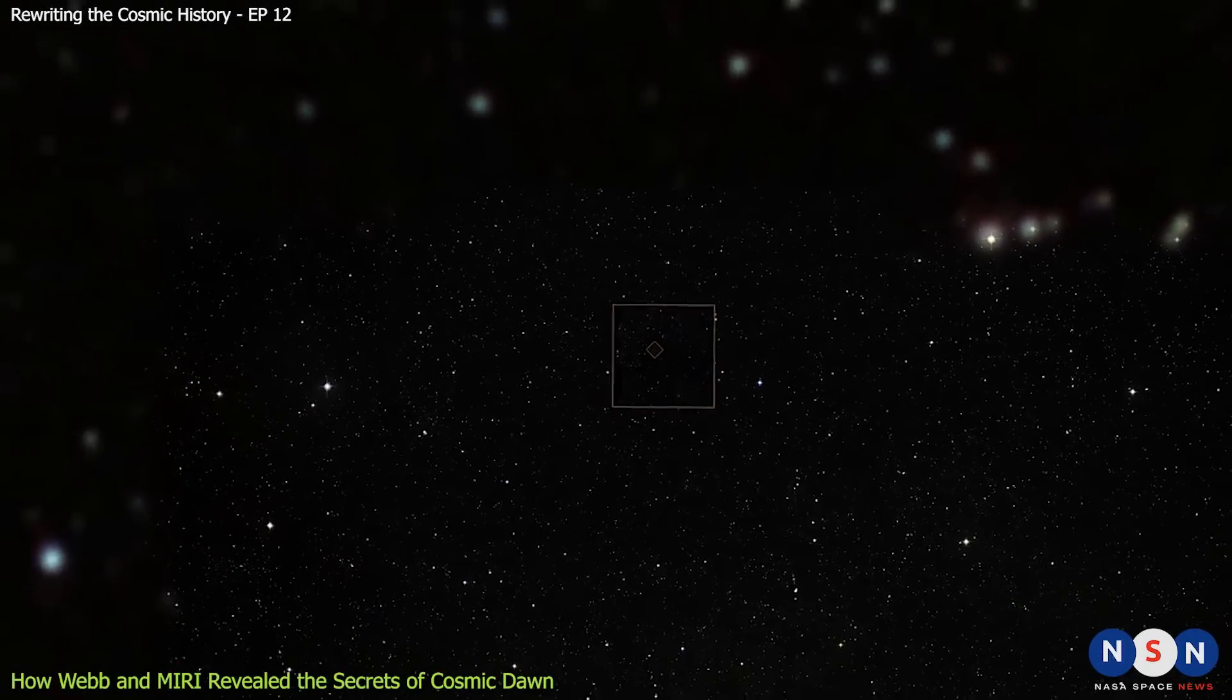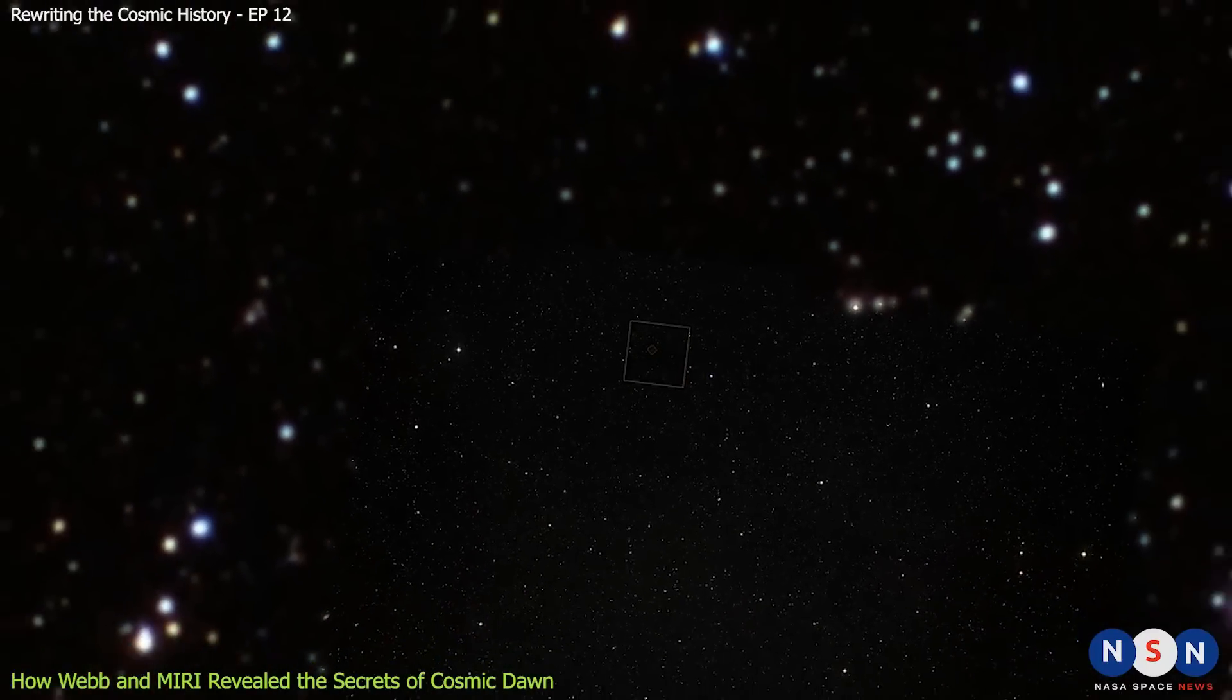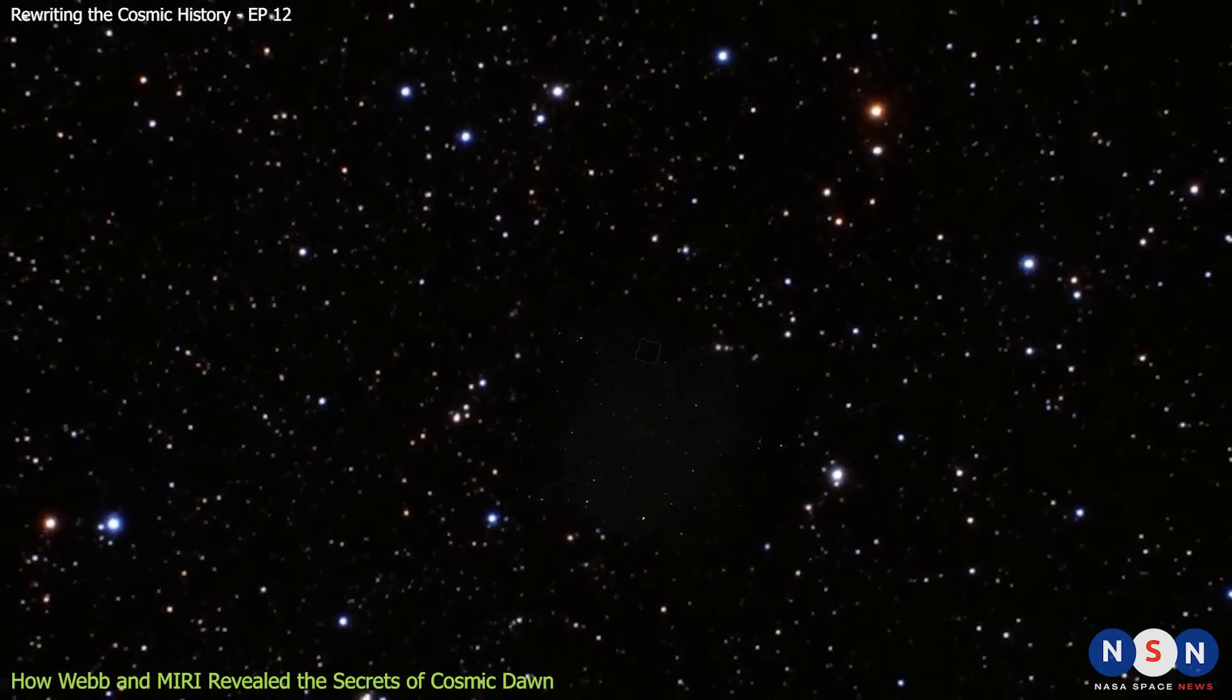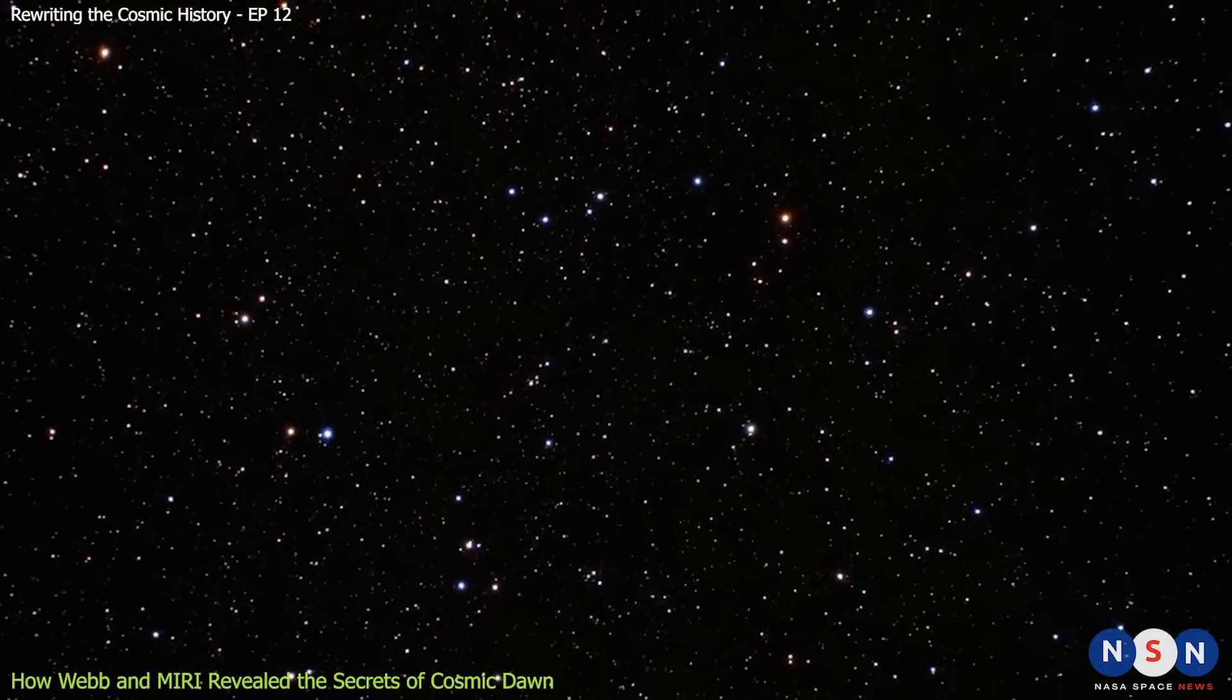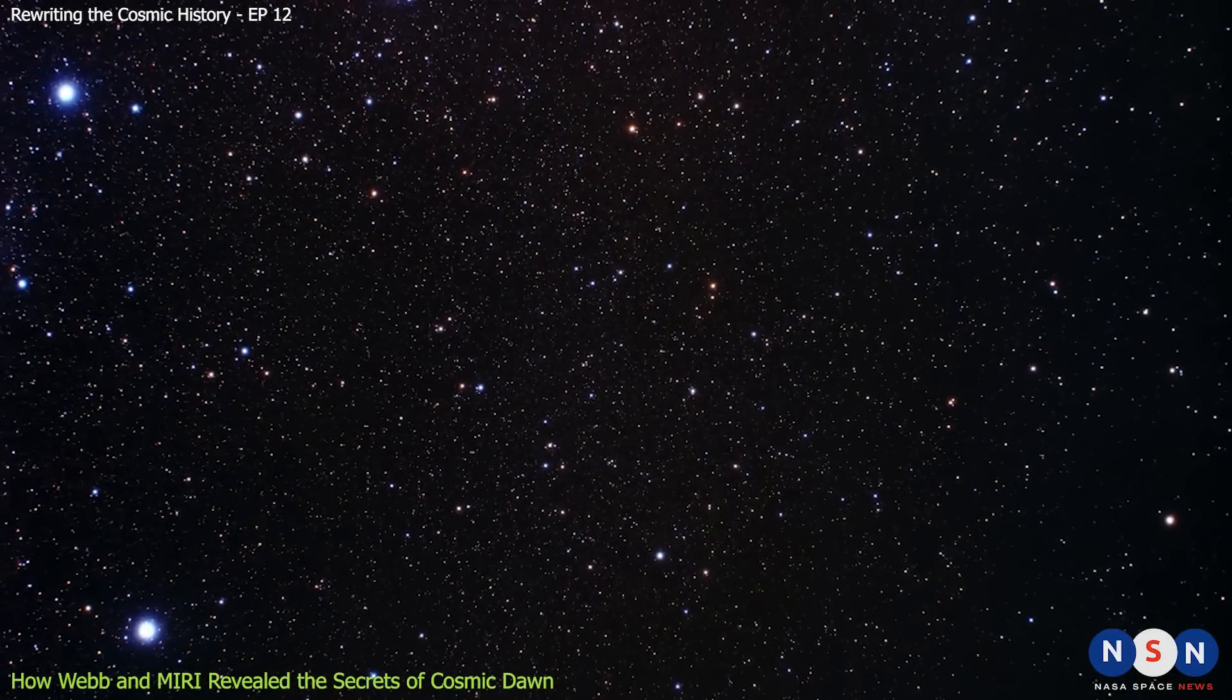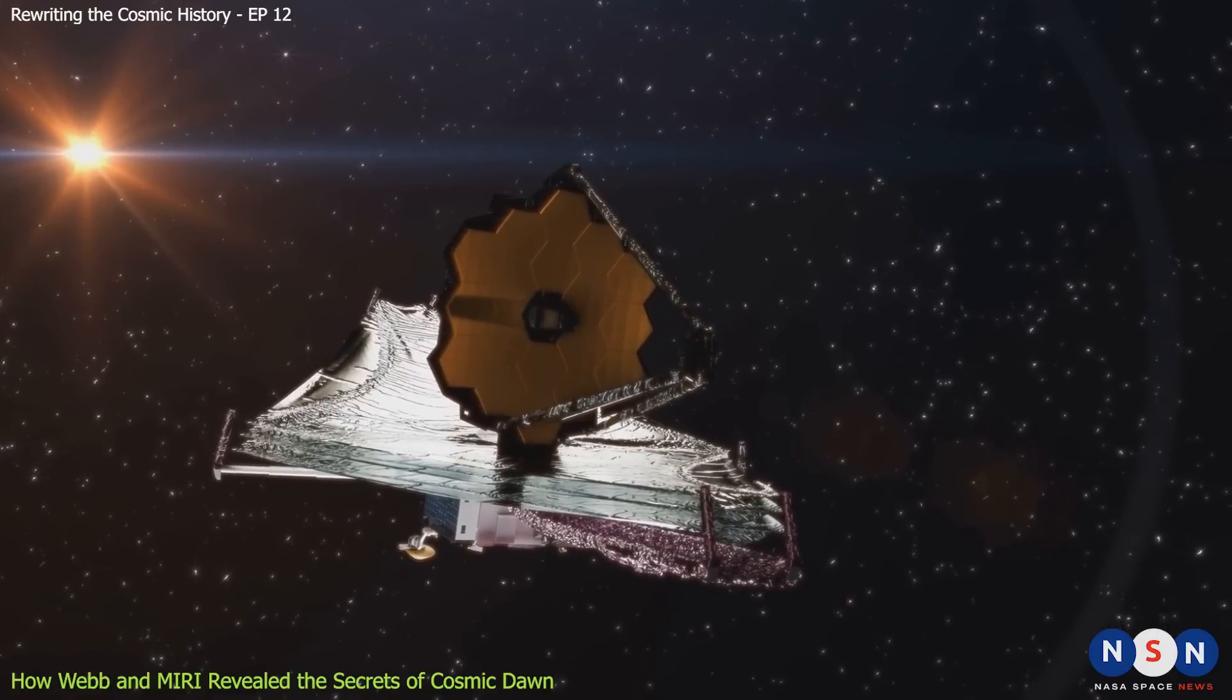Some of these galaxies are so far away that their light has traveled for more than 13 billion years to reach us. The Hubble Ultra Deep Field is one of the most profound images ever taken, because it shows us how diverse and complex the universe is.